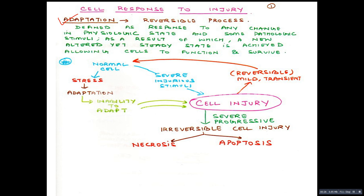What is adaptation? Adaptation is a reversible process. It is defined as a response to any change in a physiological state and some pathological stimuli, as a result of which a new altered yet steady state is achieved, allowing the cells to function and to survive. Let us look at this flowchart for a better understanding.